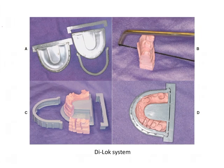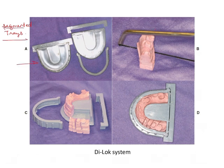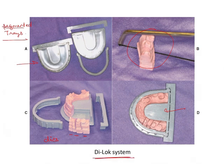The first is the Dilock system. In this system you have segmented trays, and within each tray you use a single pour technique to obtain a cast. Then with a fret saw you section the dies into individual dies, place them to form the base. This is the Dilock system of making dies.